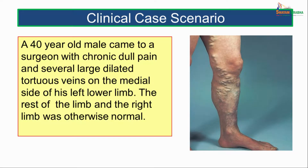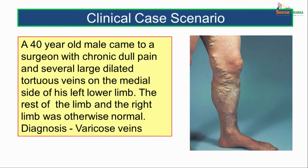Let us first see a clinical case scenario. A 40-year-old male came to a surgeon with chronic dull pain and several dilated tortuous veins on the medial side of his left lower limb. The rest of the limb and the right limb was otherwise normal. The diagnosis given was of varicose veins. Let us keep these symptoms in mind and proceed through the lecture.